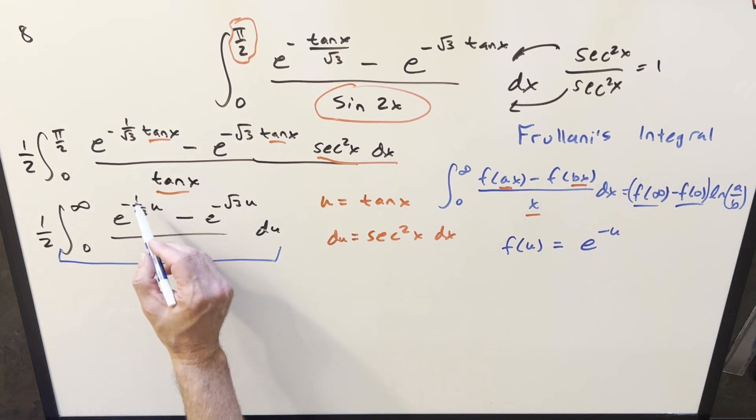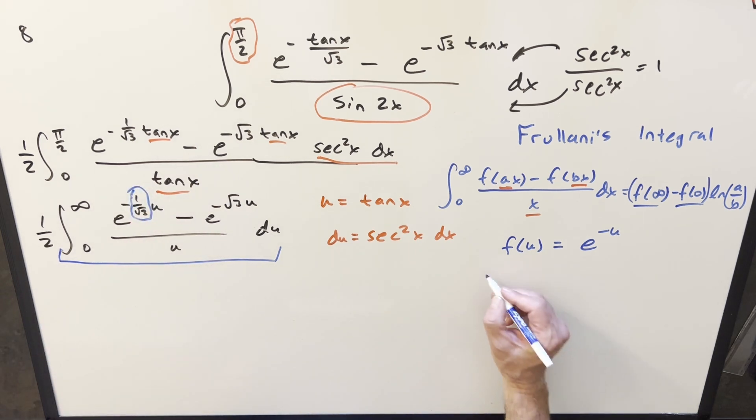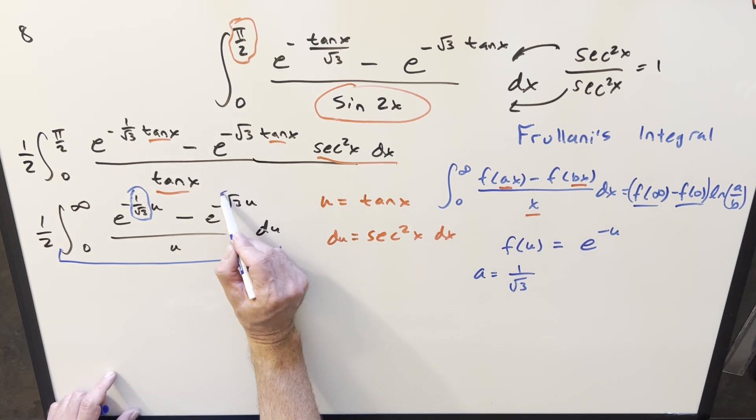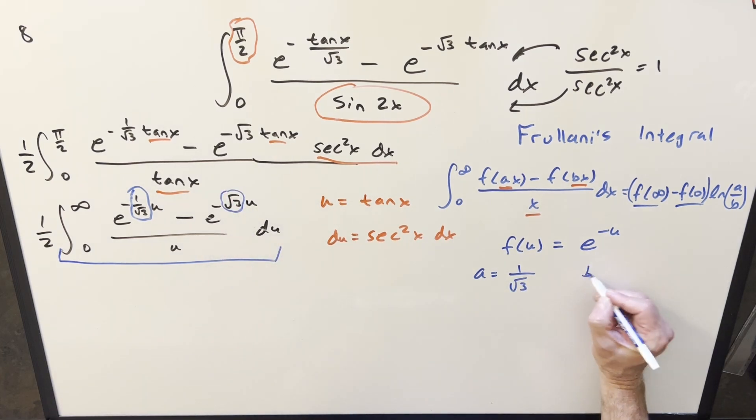And then, looking at it that way, for our a value, it's just going to be this coefficient here. Not the minus sign, just the 1 over the square root of 3. So our a value, and this is 1 over the square root of 3. The b value is just going to be square root of 3 here.